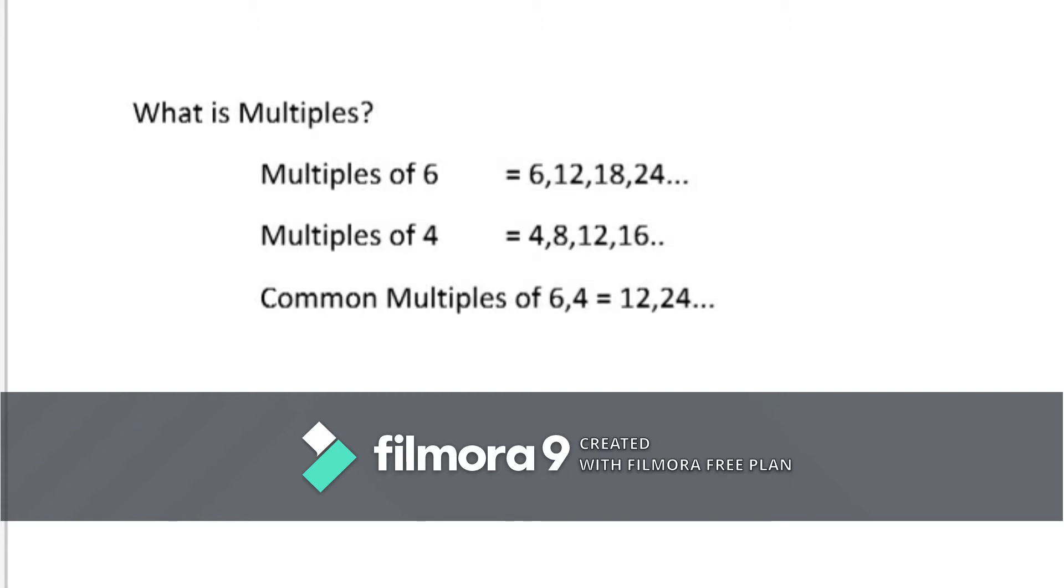For example, multiples of 6 equal to 6, 12, 18, 24 and so on. Multiples of 4 equal to 4, 8, 12, 16 and so on. From these, we can find the common multiples of 6 and 4 which is equal to 12 and 24.